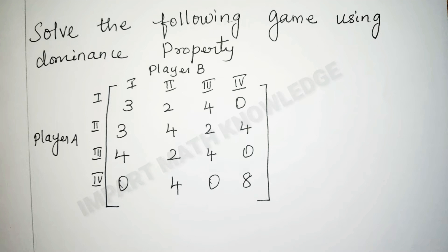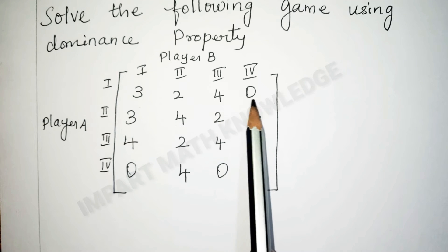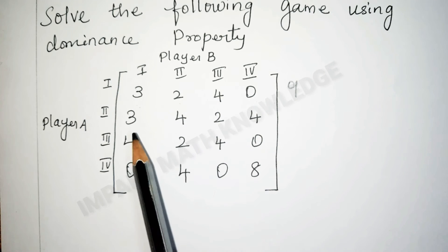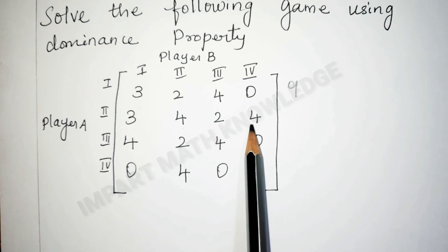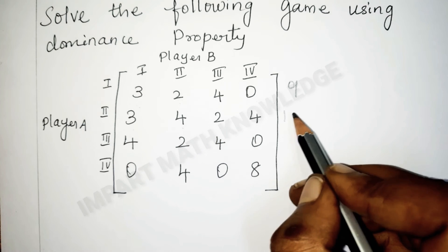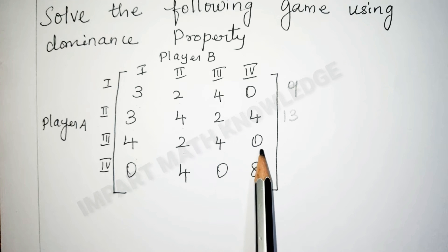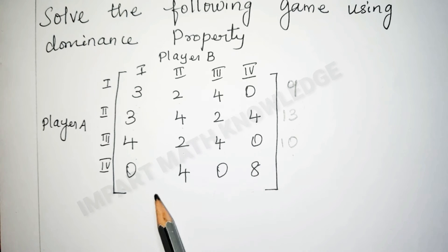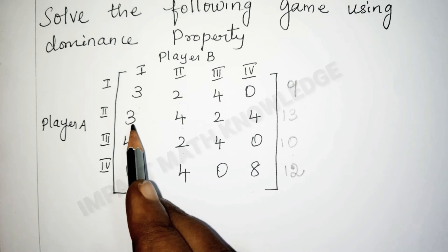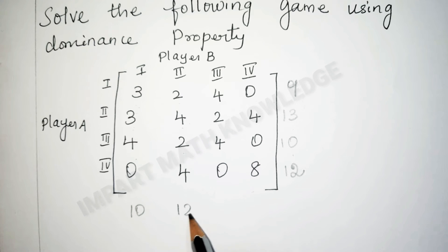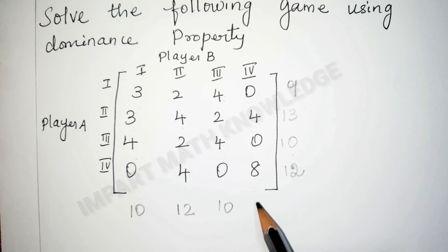If you add all the values of the first row you will get 3 plus 2 plus 4, that is 9. The second row is 3 plus 4 plus 2 plus 4, so the value is 13. The third row is 4 plus 2 plus 4 plus 0, that is 10. The fourth row total is 12. For the columns: 3 plus 3 plus 4 is 10; 2 plus 4 plus 2 plus 4 is 10; and 0 plus 4 plus 0 plus 8 is 12.